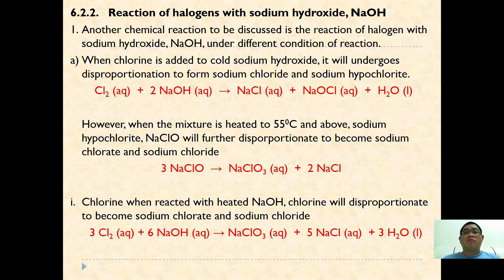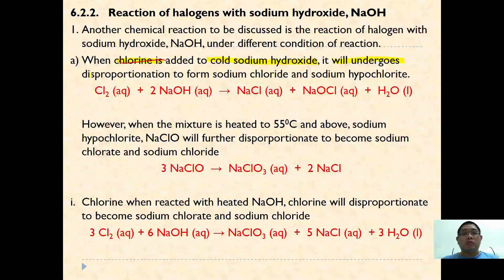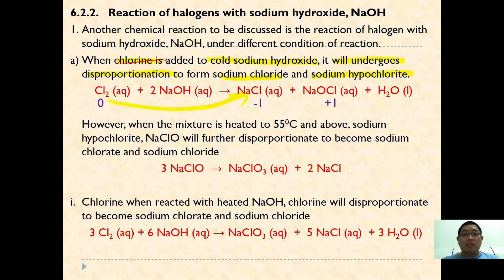When chlorine is first added to cold sodium hydroxide, it will undergo disproportionation to form sodium chloride and sodium hypochlorite. This is a disproportionation reaction because oxidation and reduction take place simultaneously on the same substance.